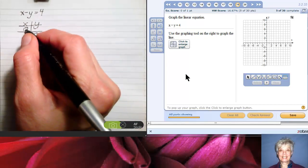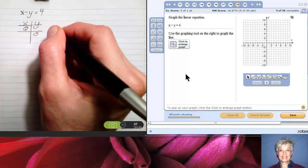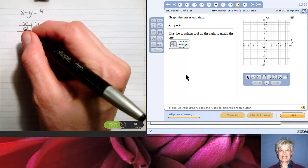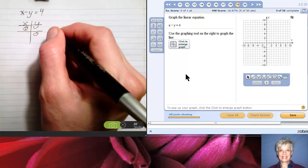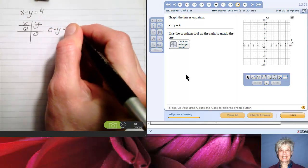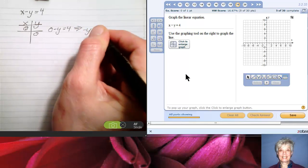The way I find intercepts is I put a 0 here and a 0 here and then I calculate. What is y when x equals 0? So I come over here and I substitute a 0 for x because 0 is in the x column, and I say 0 minus y equals 4, which means negative y equals 4.